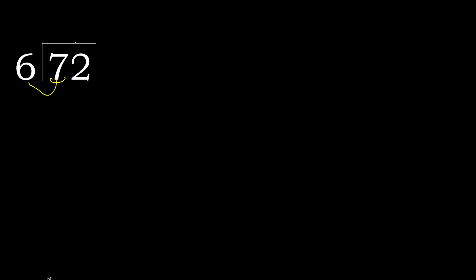72 divided by 6. Here 7 is not less, therefore with 7: 6 multiplied by which number is nearest to 7 but not greater? 6 multiplied by 2 is 12, is greater. Multiplied by 1 is 6, is not greater. 7 minus 6 is 1.